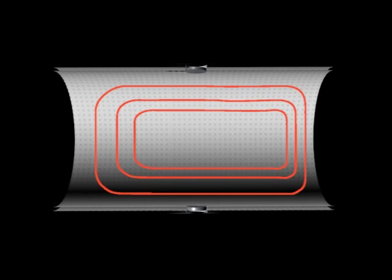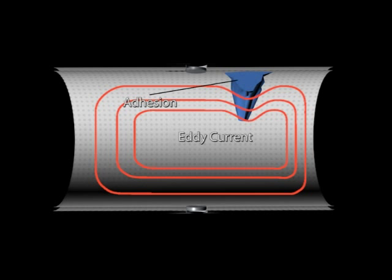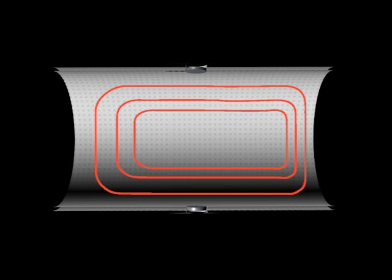Induced noise is generated by eddy currents in the conductive process liquid in the tube. When conductors, such as the liner or process fluid, are exposed to changing magnetic fields generated from the coil's electromagnetic drive, eddy currents will be induced in the conductors. Eddy currents create induced magnetic fields, which oppose the change of the original magnetic field generated by the coil drive. This is called electromagnetic induction.